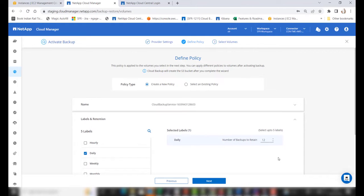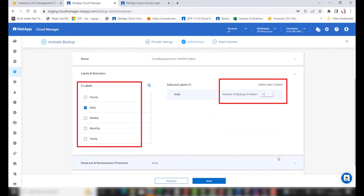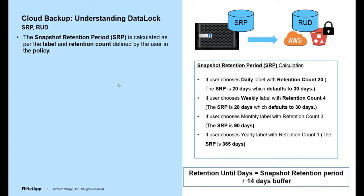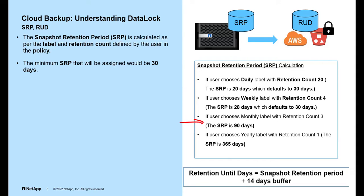In the label and retention section, make sure to select the label and retention carefully, as it determines the snapshot retention period. The snapshot retention period is calculated based on the label and the retention count defined in the policy. Note that the minimum snapshot retention period assigned will be 30 days. For example, if a user chooses a daily label with a retention count of 20, the snapshot retention period is calculated as 20 days but defaults to 30 days as the minimum. If the user chooses a monthly label with a retention count of 3, the snapshot retention period is calculated as 90 days.